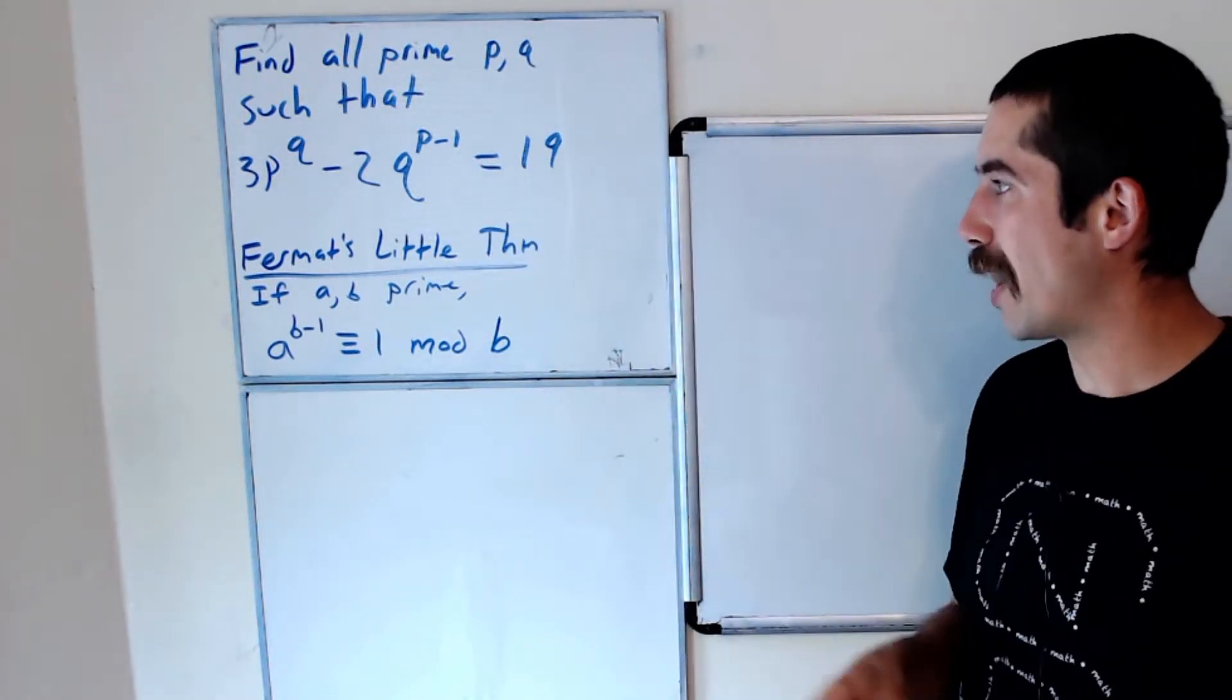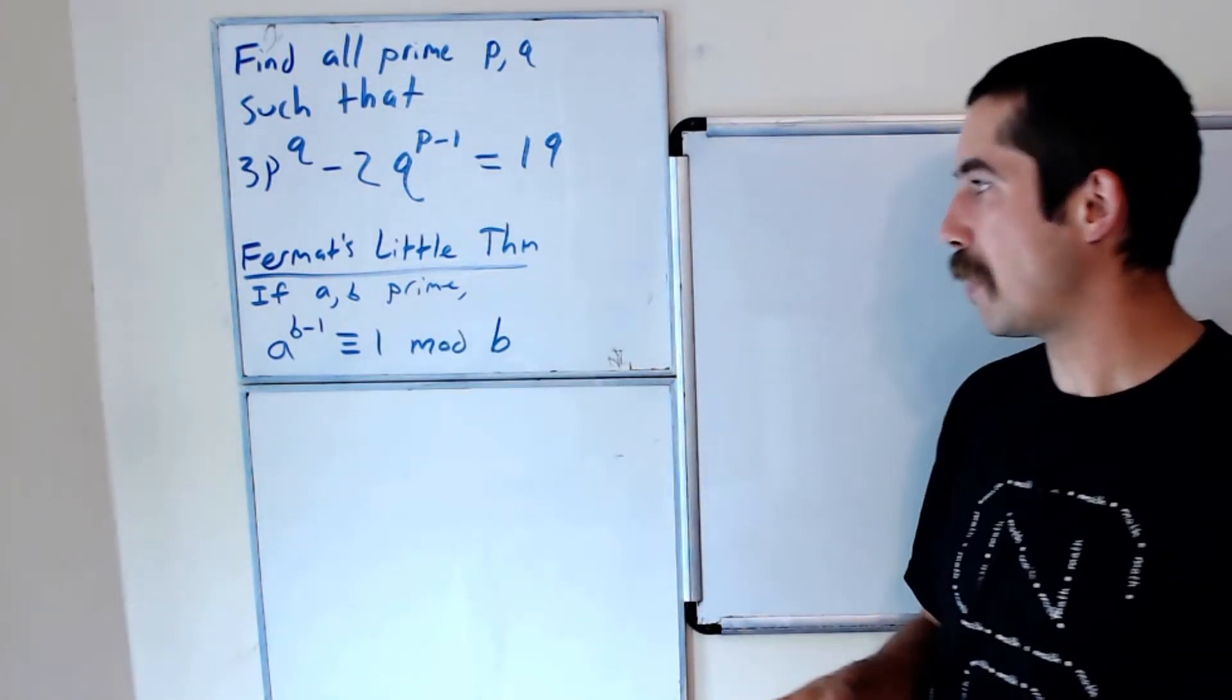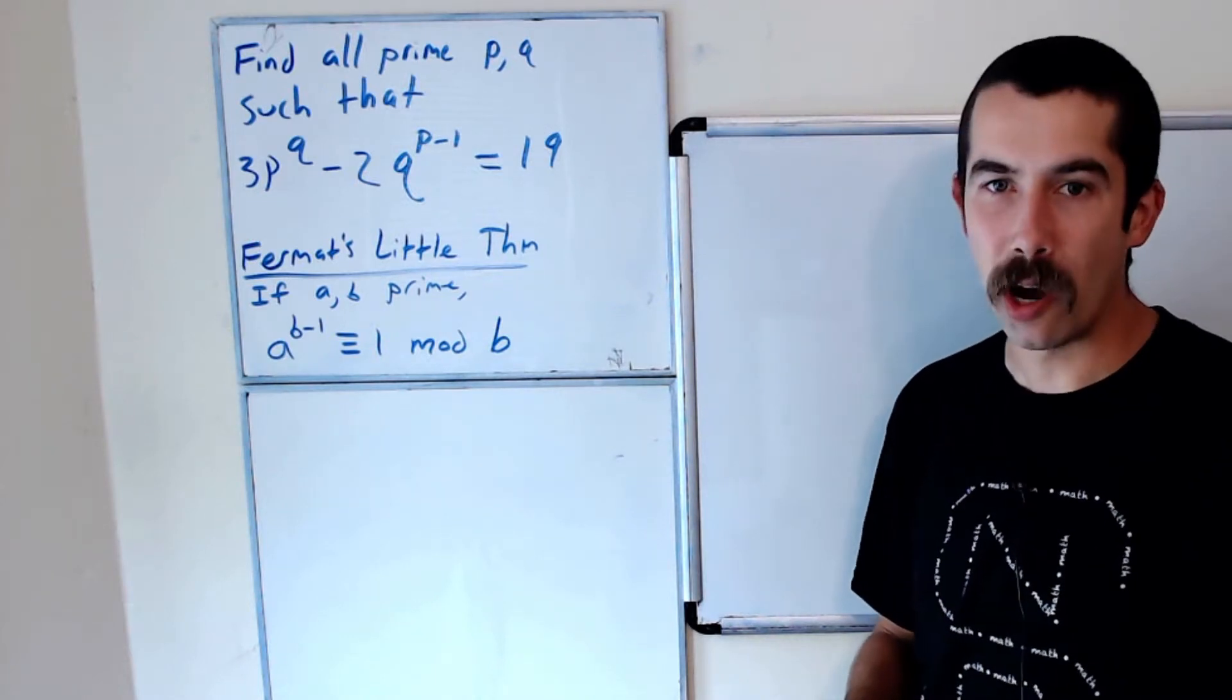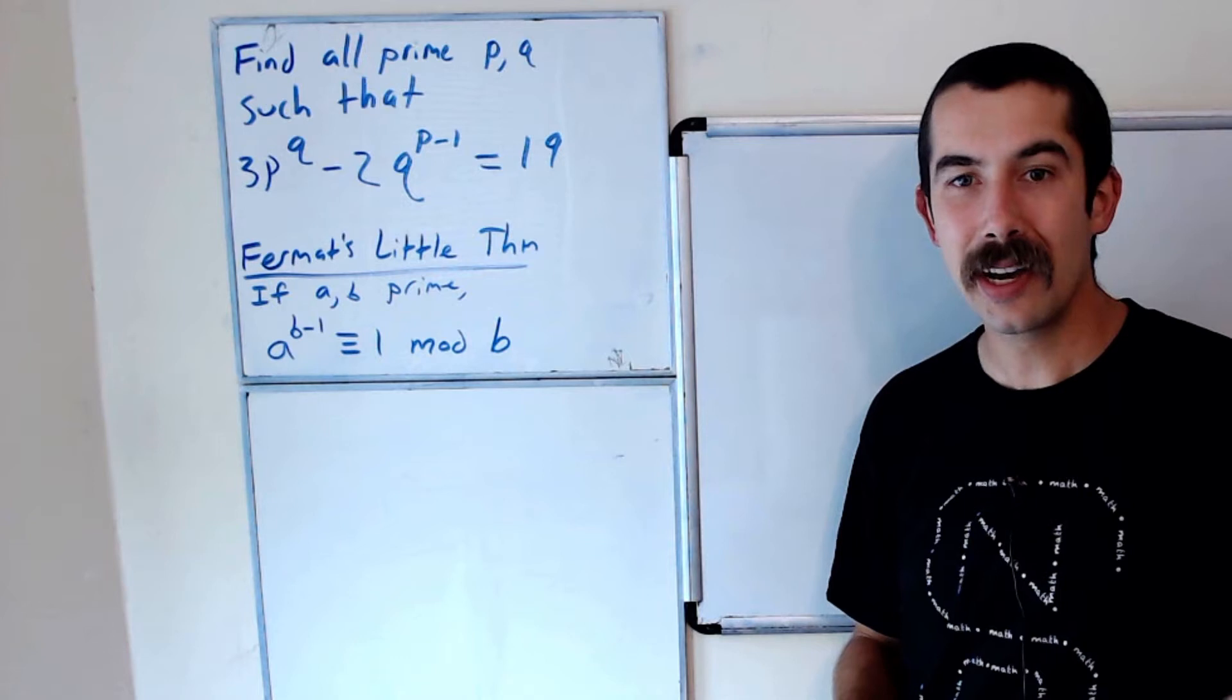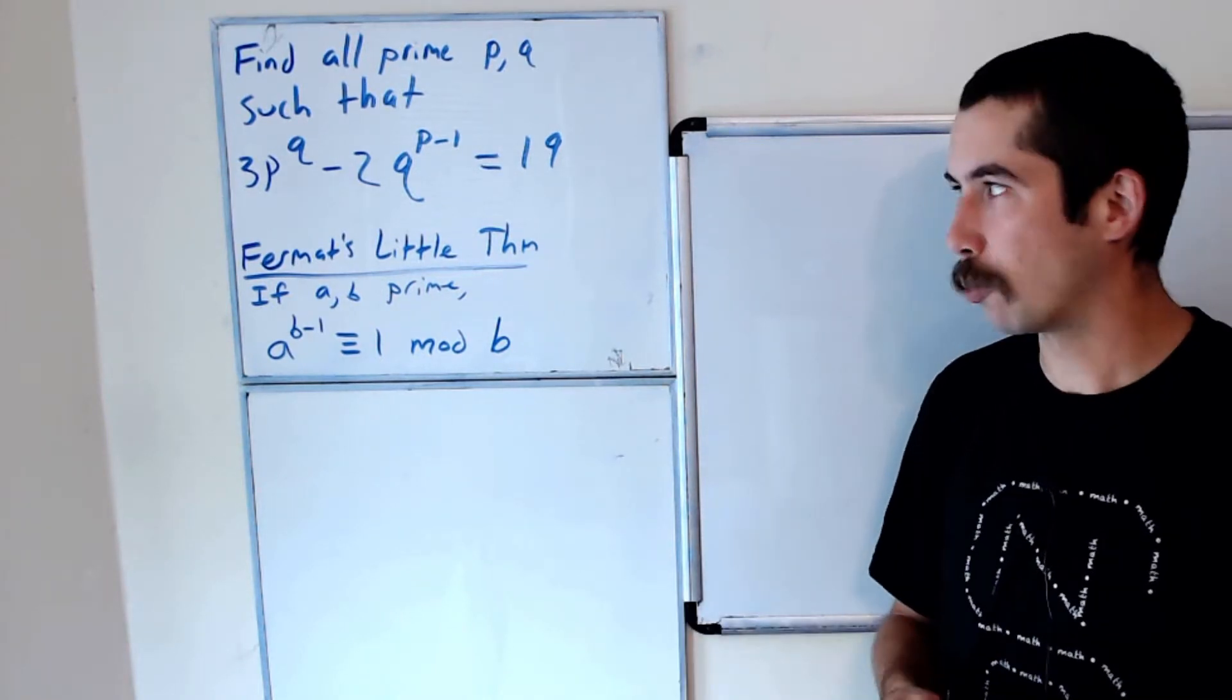And here's a hint we're going to be using Fermat's Little Theorem, which says if you have two prime numbers a and b, a^(b-1) is congruent to 1 mod b. So try it on your own and let me know in the comments if you're able to find the solutions, or you can just watch me solve it.